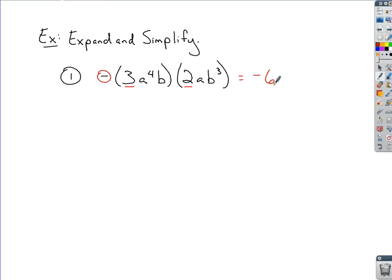With the variables, variables you've got like bases, so you've got to remember your rules for multiplying with like bases so you would add your exponents. So for the As, when I multiply those out, I've got A to the 5th, and for the Bs, when I multiply those out, I've got B to the 1st over here, B to the 3rd, that'd be B to the 4th.